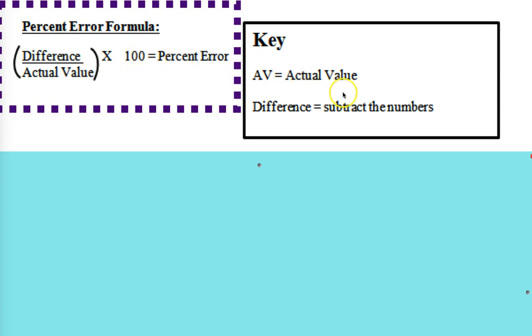Let's take a look at each of these things. Actual value, where it says AV equals actual value, is the correct answer. The actual value is the right answer, it's objective, and that will be given to you if you're asked to do a percent error problem. The difference is the difference between your answer and the actual value. So those are the two numbers that you're subtracting.